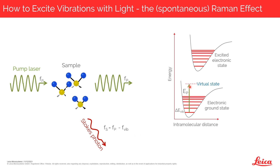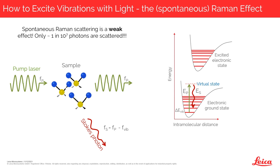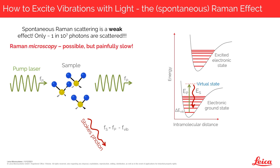In the energy diagram, we talk about going to a virtual state from which we then get the spontaneous emission of a Stokes photon. Because this is such a weak effect — only about one in 10 to the seven photons are scattered in this way — Raman microscopy is possible, but everyone in the field agrees that it is painfully slow.